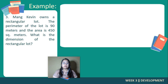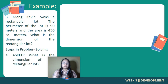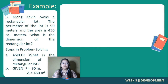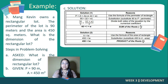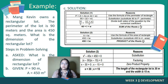Example number three — word problem: Ma'am Kevin owns a rectangular lot. The perimeter of the lot is 90 meters and the area is 450 square meters. What is the dimension of the rectangular lot? First, identify what is asked: the dimension of the rectangular lot. Next, identify the given: the perimeter is 90 meters and the area is 450 square meters. Since the lot is rectangular, we will use the formula for the perimeter and the area of a rectangle.